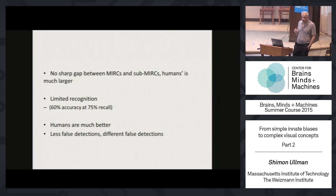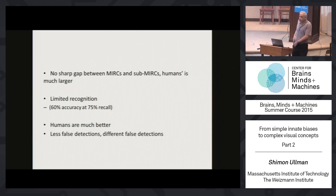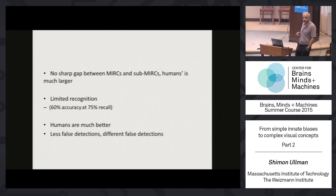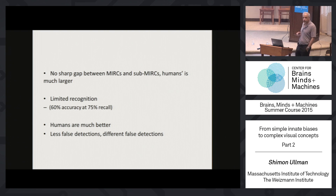You can always ask what happens if you train with 100,000 images, but with the experiments we've done, which are quite extensive, it does not begin to approach human accuracy. Humans are much better. I think it's not just the competition of who does better — there is something deeper there. The error comparison shows zero errors for humans, 17% errors in deep networks, and so on, with big, big differences.